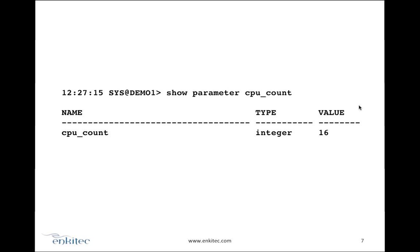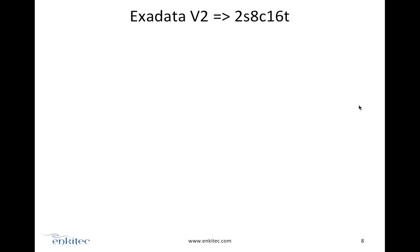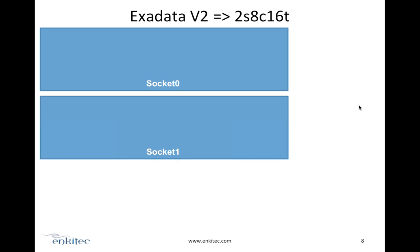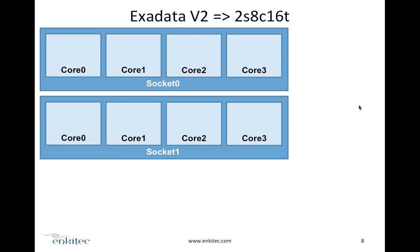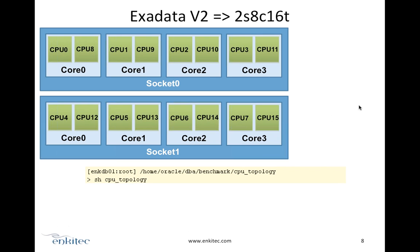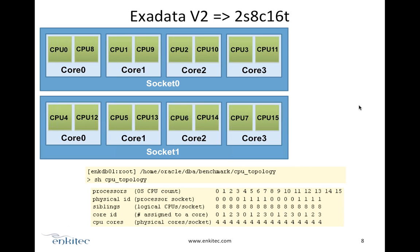Let's dive deeper into the CPU architecture of Exadata version 2. It's two sockets, eight cores, and 16 threads. Two sockets with four cores each totals eight cores. For each core, you have a duplicate — that's the hyper-threading technology. For each socket you get eight threads or logical CPUs, totaling 16 threads.